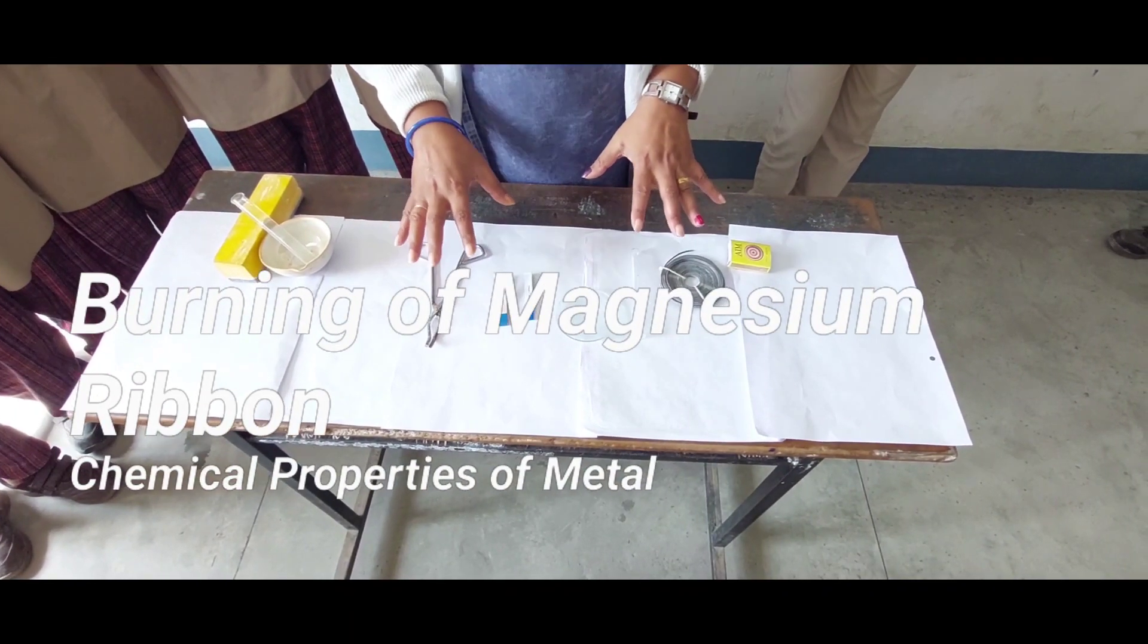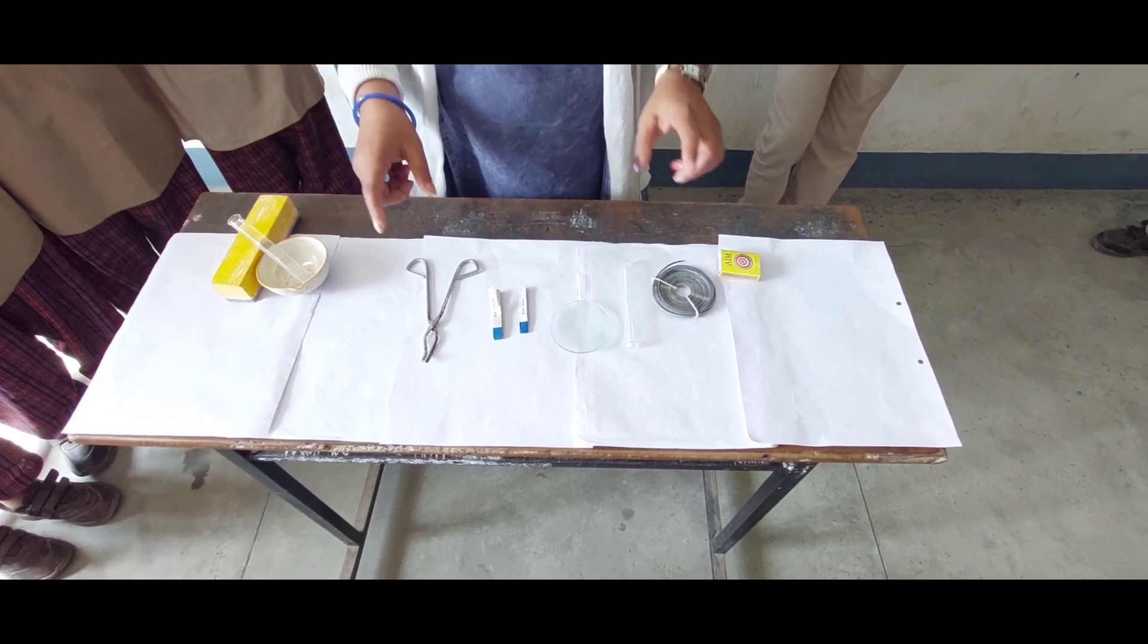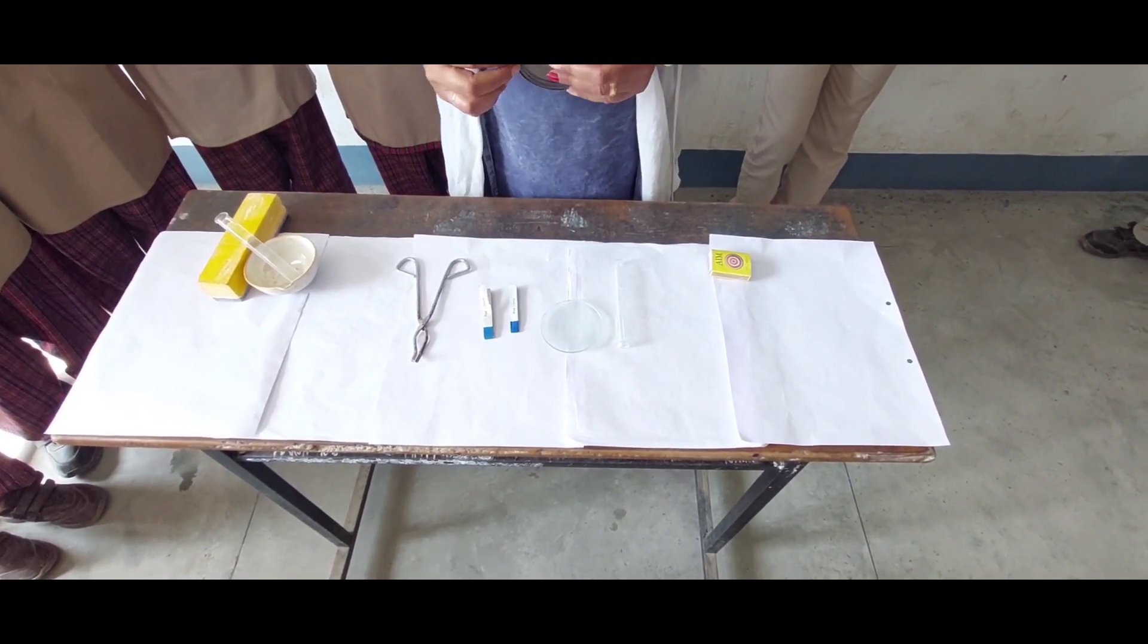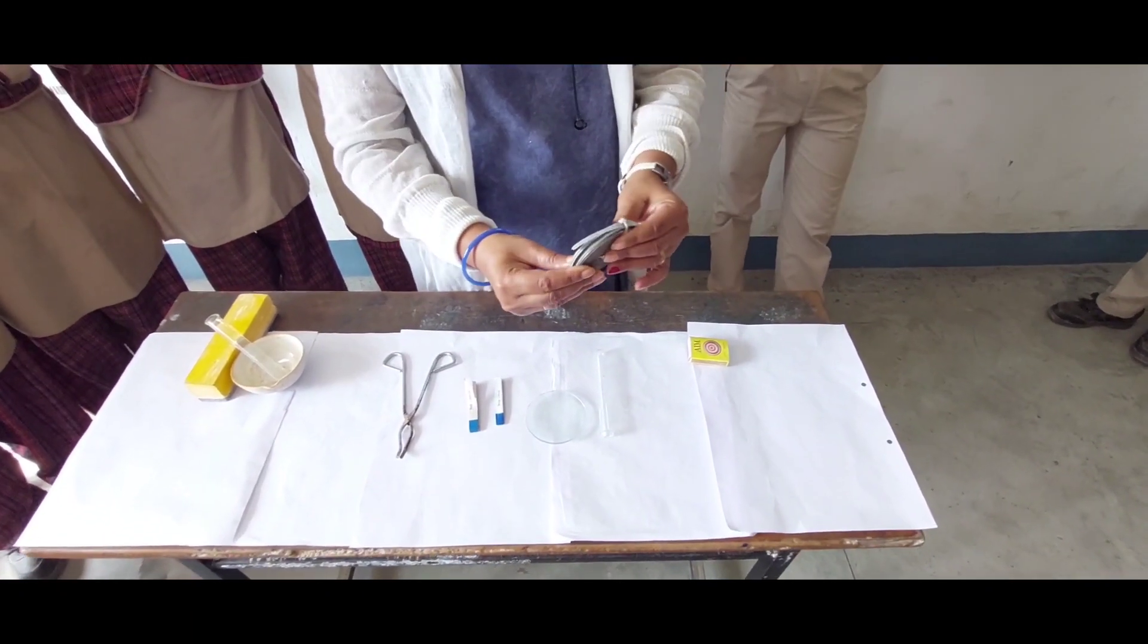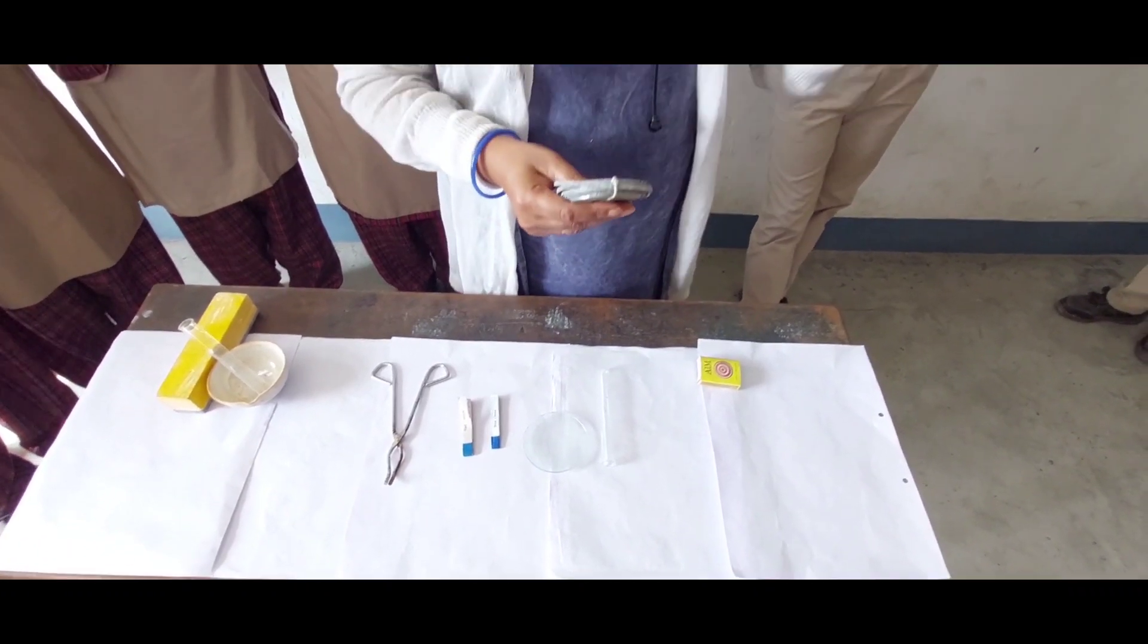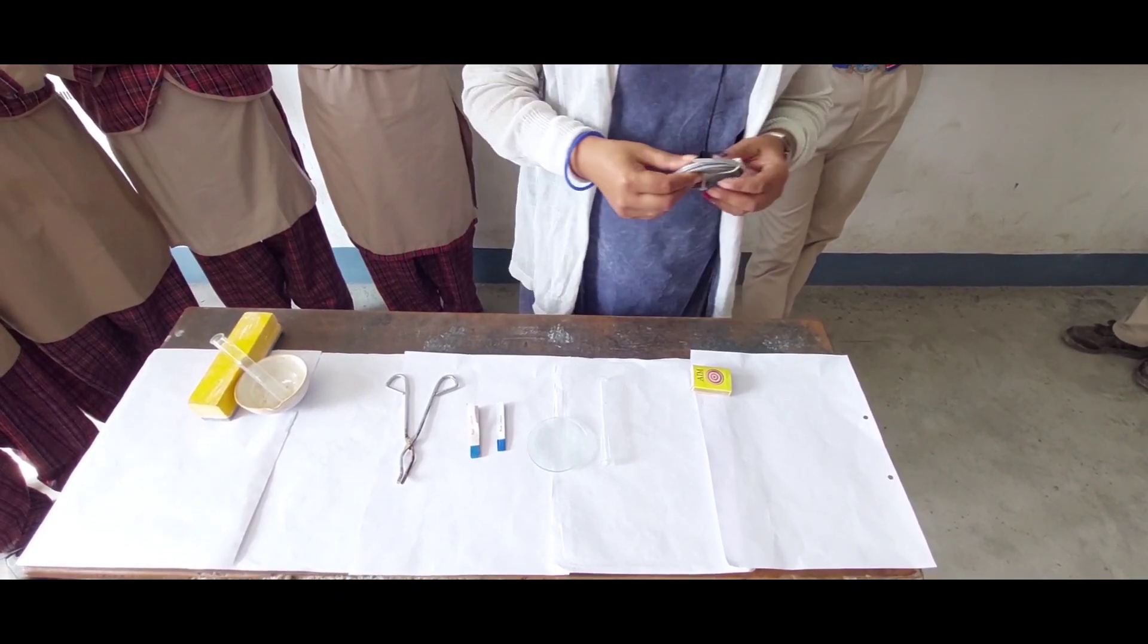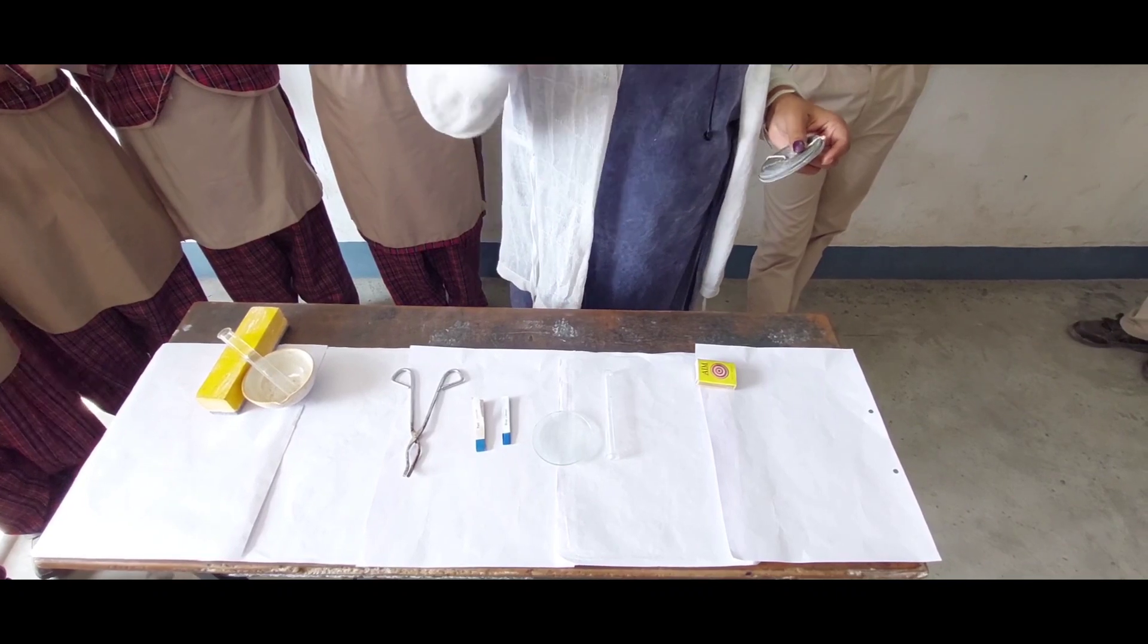Today we're going to see the experiment of burning magnesium to demonstrate the chemical properties of metals. We know that metals have a shiny surface. This is magnesium ribbon, and we have to burn it to show combustion in the presence of air.